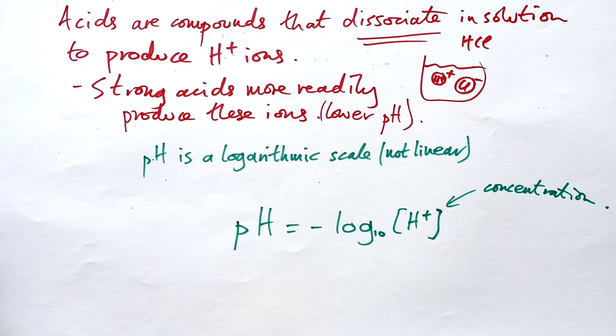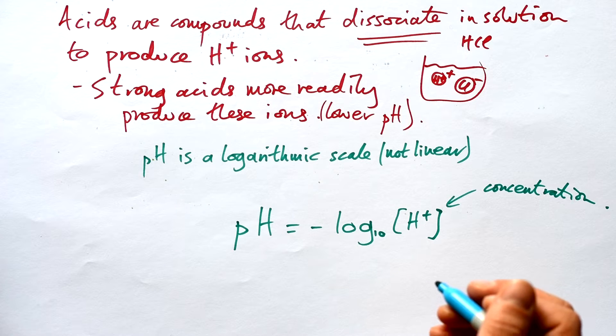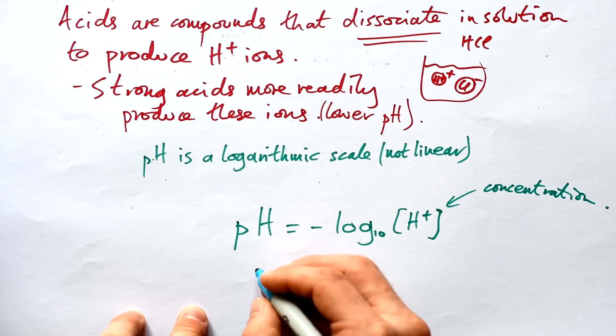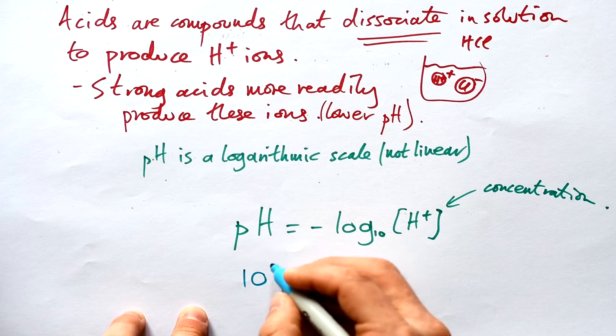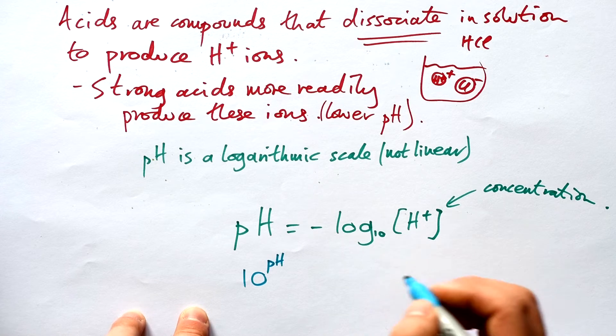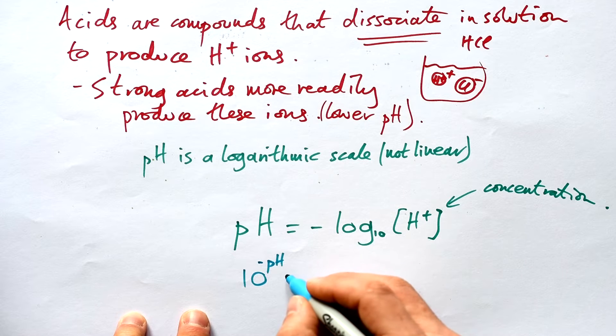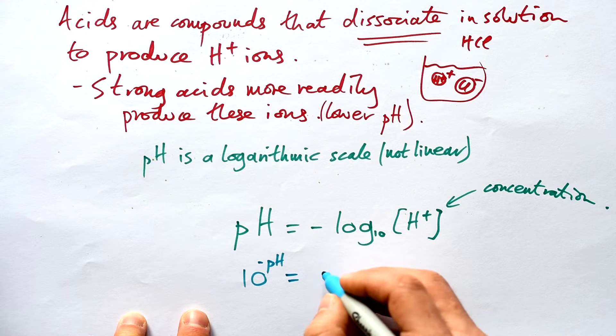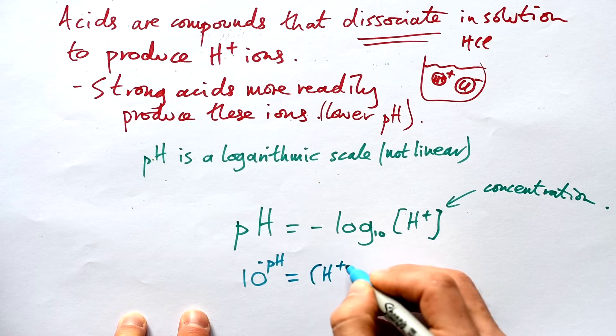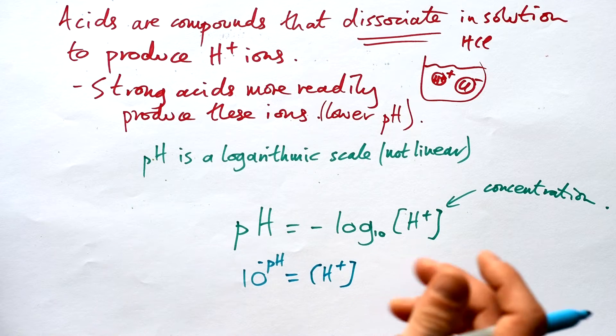It's a little bit difficult to explain until you do logs maybe in A-level maths. But what I can do is rearrange this equation. If I get rid of the log, what I actually do is put 10 to the power of -pH, and that is equal to concentration of hydrogen plus ions.